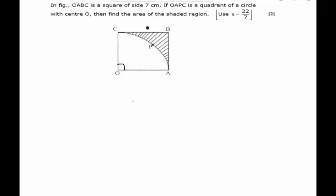Hello friends. In this example we have been given OABC, a square of side 7 cm, and OAPC, a quadrant of the circle with center O, and we are supposed to find out the area of the shaded region. The area of the shaded region can be found by subtracting the area of the quadrant OAPC from the area of the square.